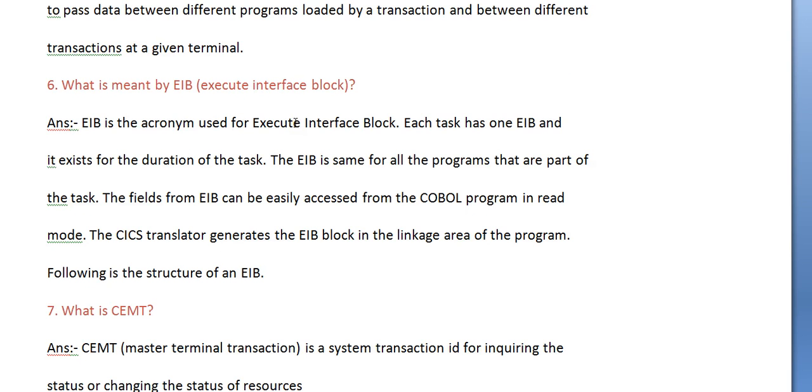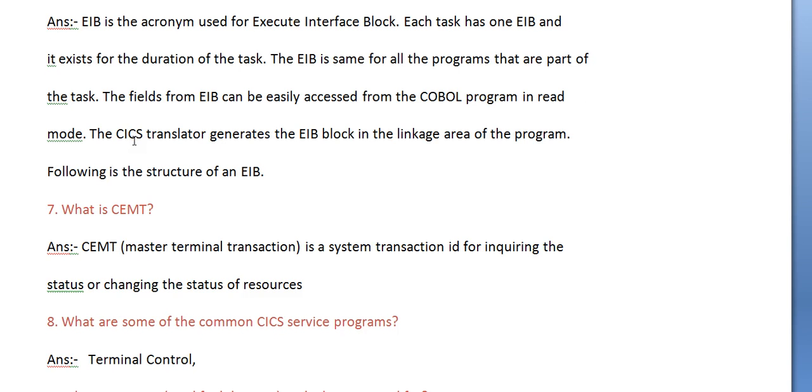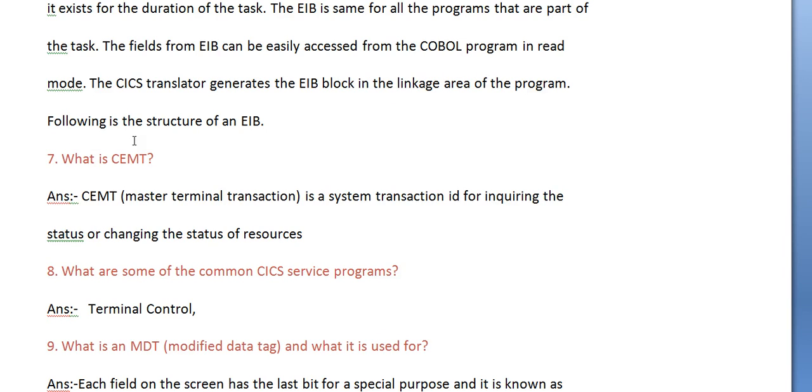What is meant by EIB (Execute Interface Block)? EIB is the acronym for Execute Interface Block. Each task has an EIB and it exists for the duration of the task. The EIB is the same for all programs that are part of the task. The fields from EIB can be easily accessed from the COBOL program in read mode. The CICS translator generates the EIB block in the linkage area of the program.